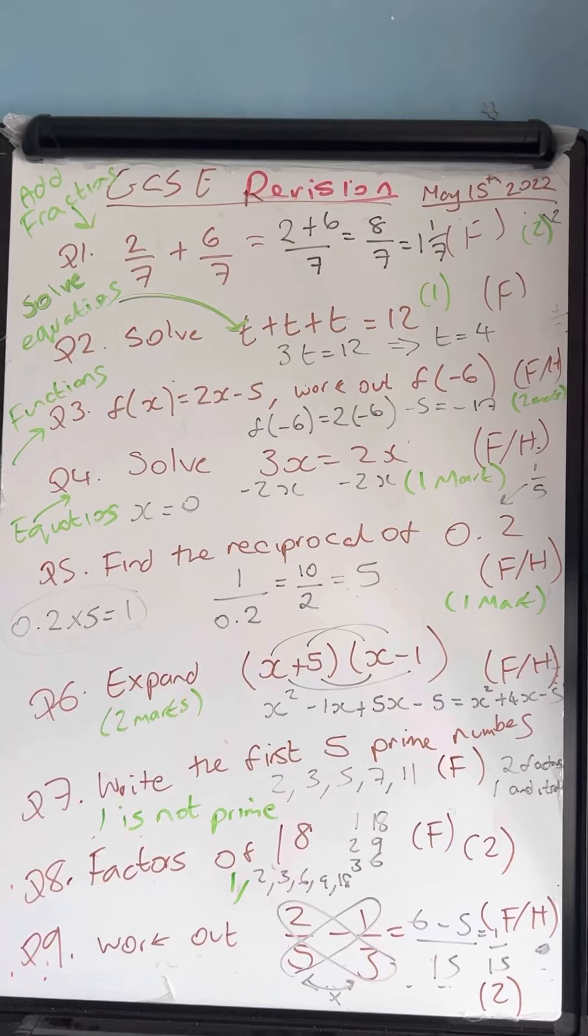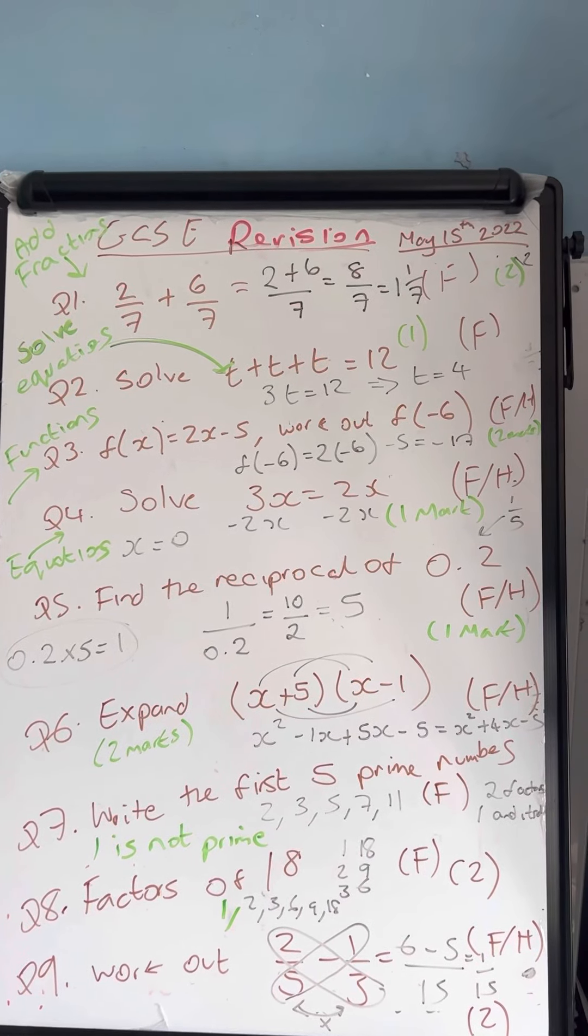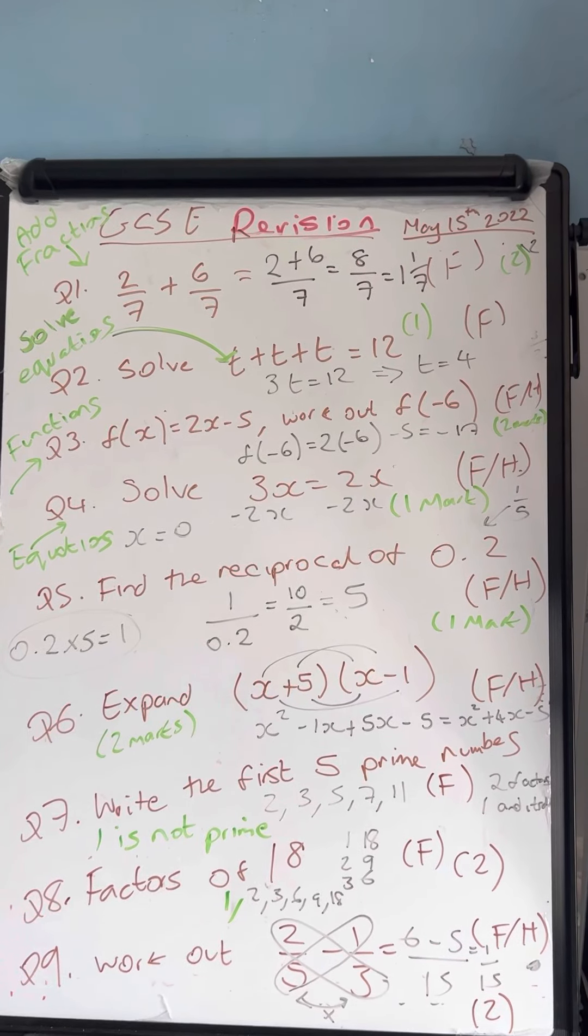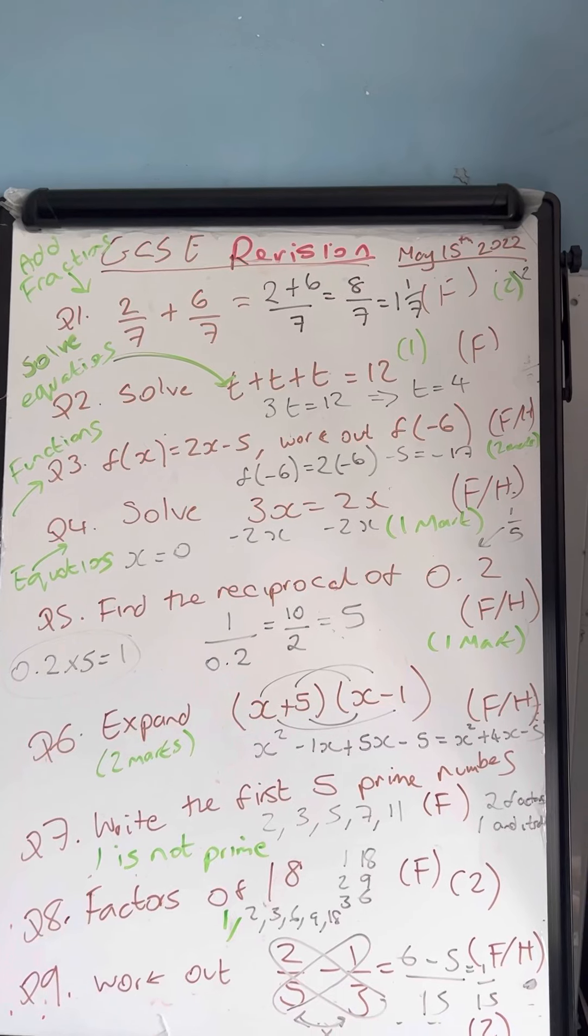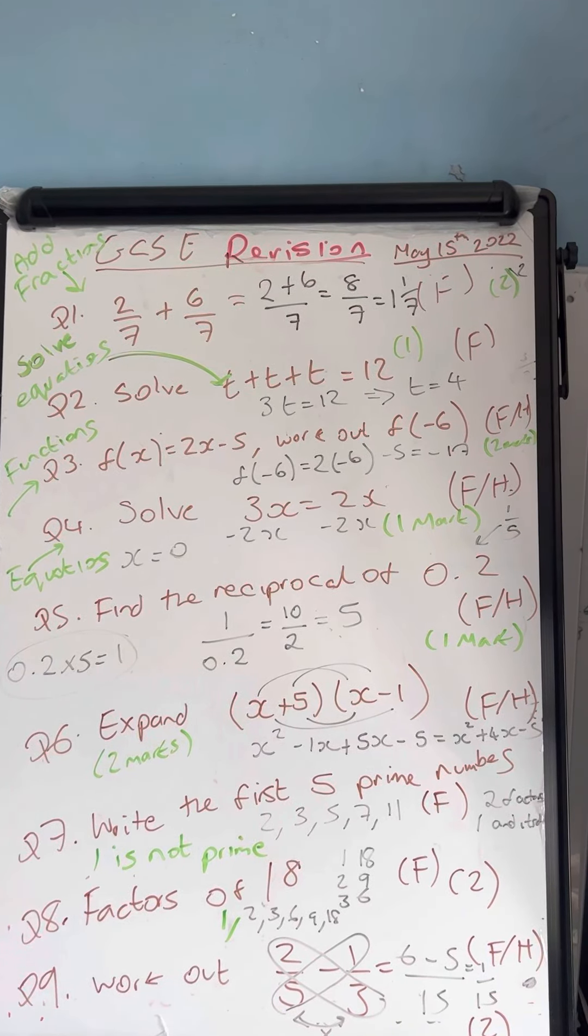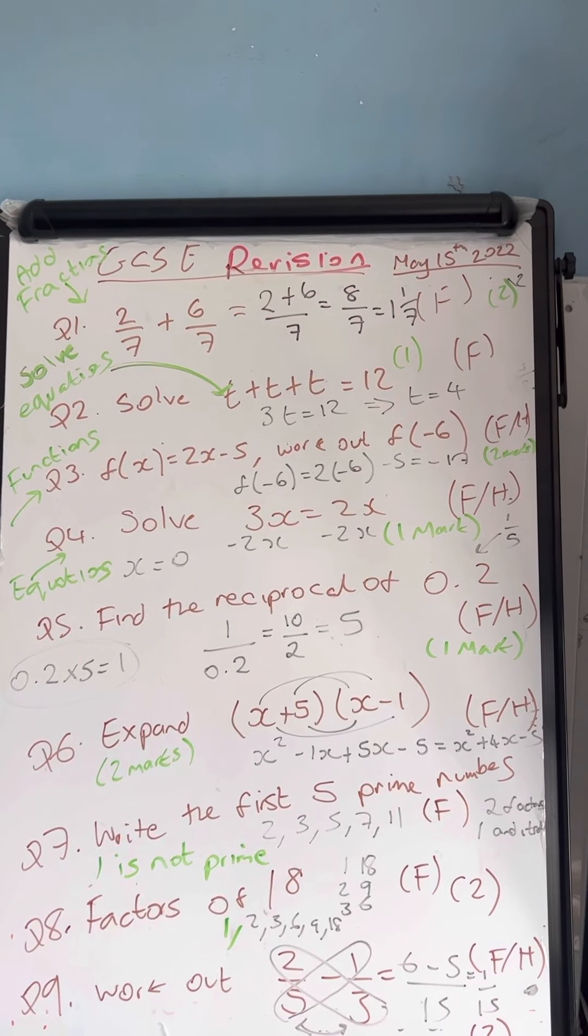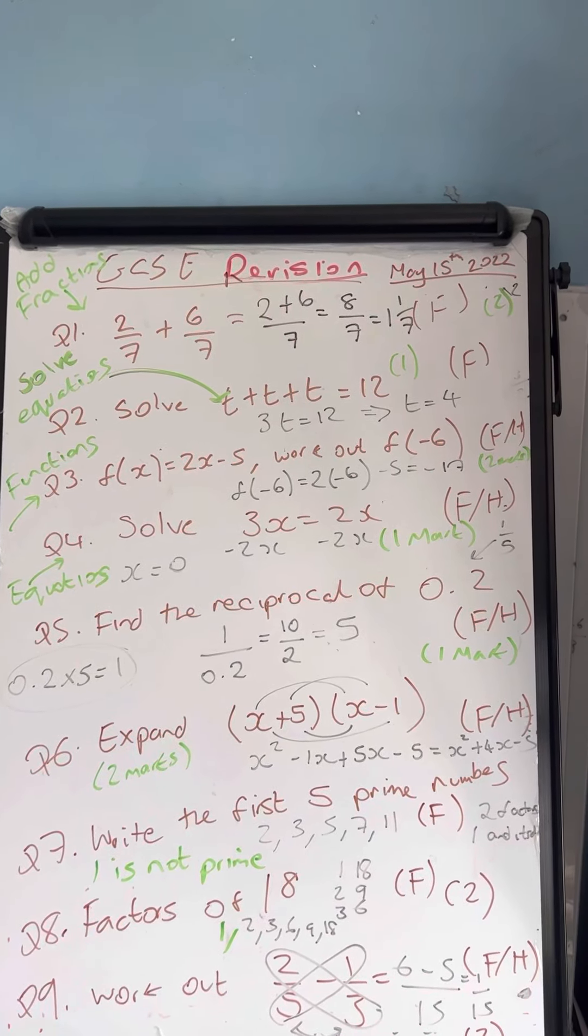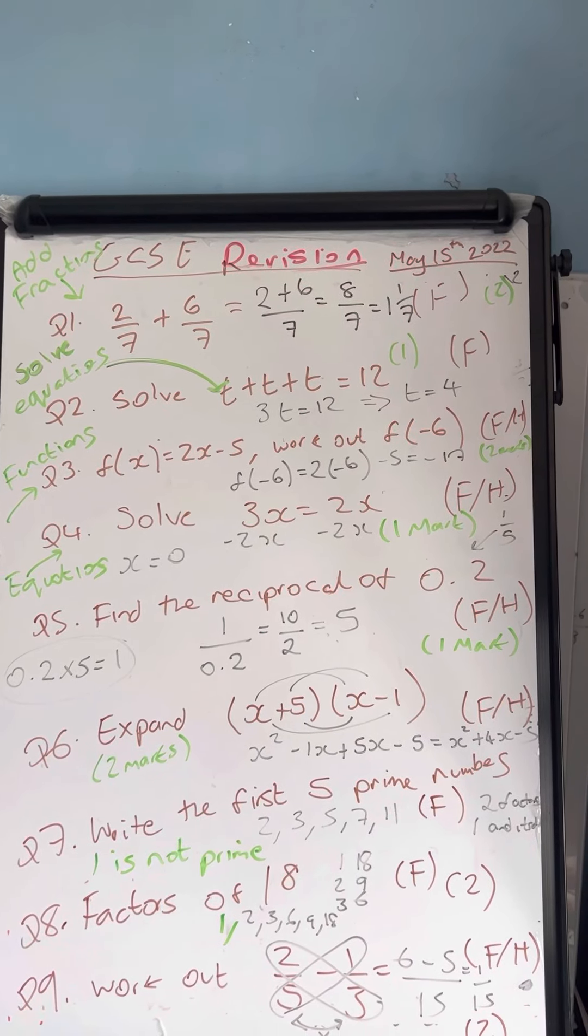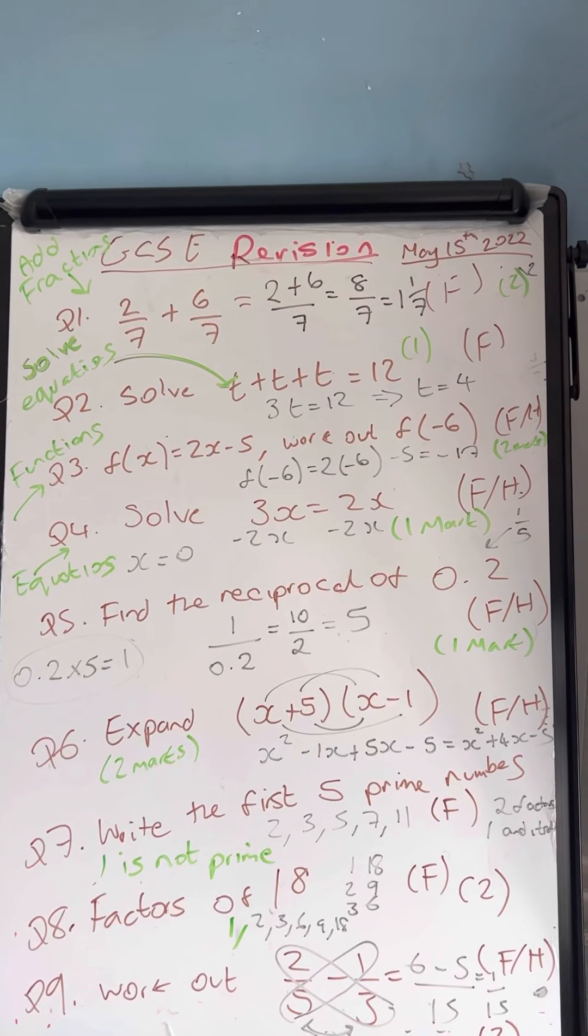This is question number two. Solve this equation: T plus T plus T equals 12. Collecting like terms on the left-hand side, I get 3T is equal to 12. Dividing both sides by 3, because 3T means 3 times T. The opposite operation, the inverse operation, is dividing by 3. T is equal to 12 divided by 3, which is 4. You can check your answer: 4 plus 4 plus 4 is 12, which is correct.